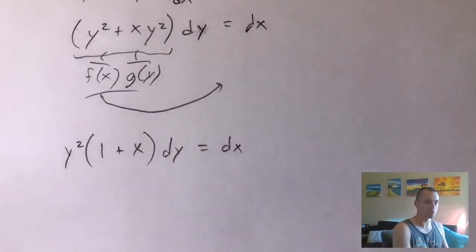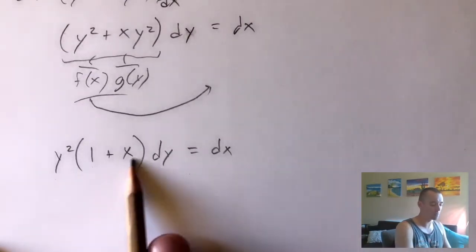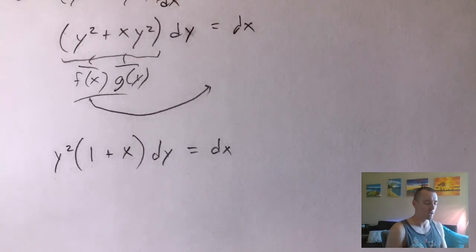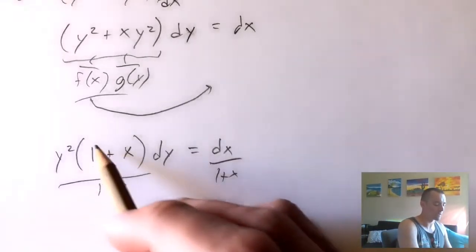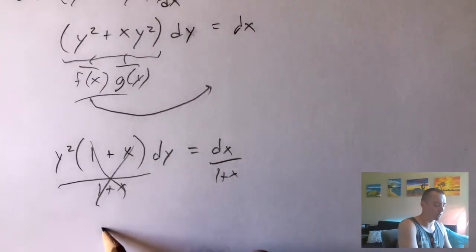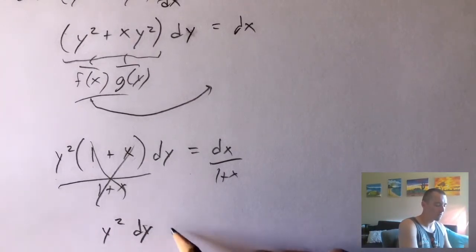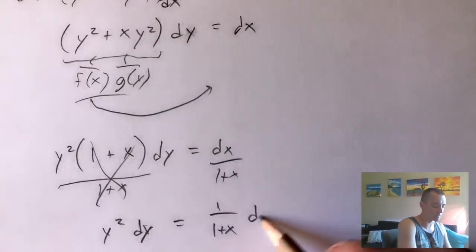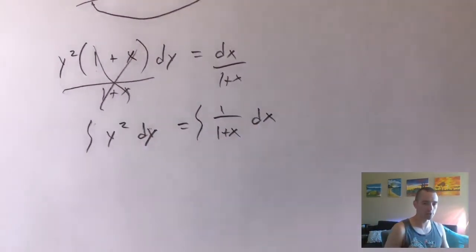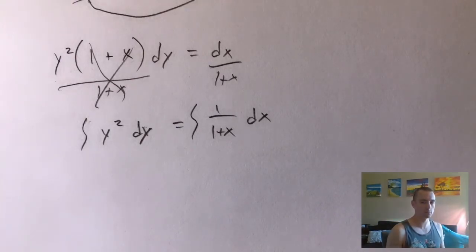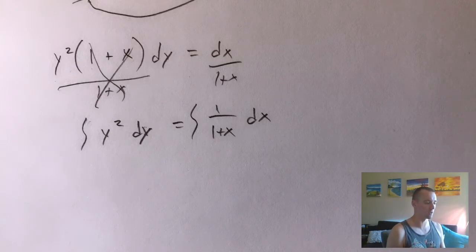Now what we can do is divide both sides by one plus x, since what's in the parentheses contains all of our x's and no y's. That's going to cancel the one plus x on the left, and we're just going to be left with y squared times dy equals one over one plus x times dx. Now we've got our dy and all of our y's on the left side, and our dx and all of our x's on the right side. Now we can just throw an integral sign on both sides of our equation and integrate each side to get rid of the dx and dy — they become an indicator of what variable we're integrating with respect to, and then they disappear.